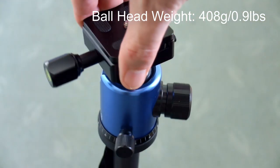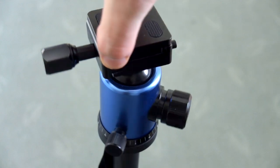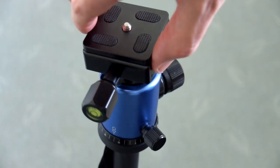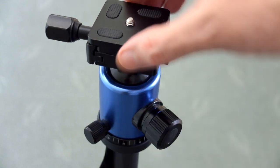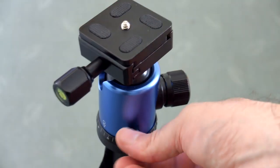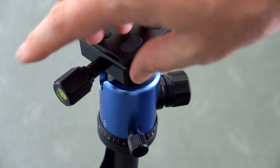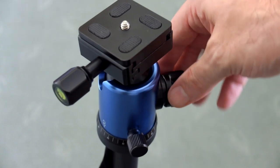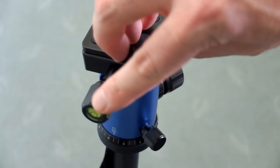Moving to the ball head. This has a panoramic function. This is dampened so it doesn't move very freely. It has some resistance and it's quite smooth. The bottom knob here will lock that off, the rotation.